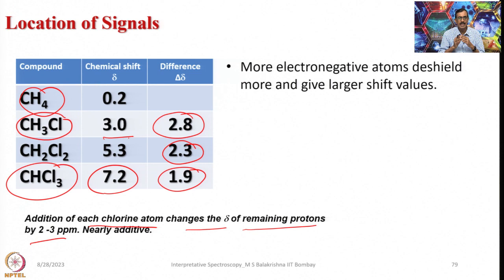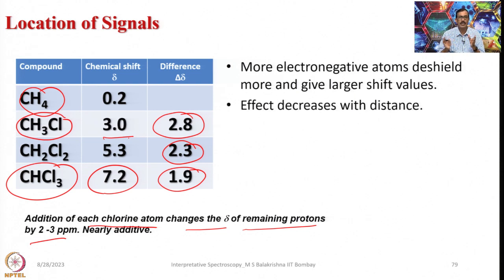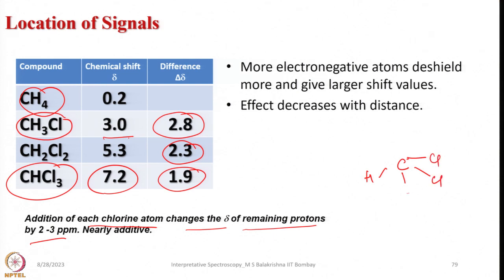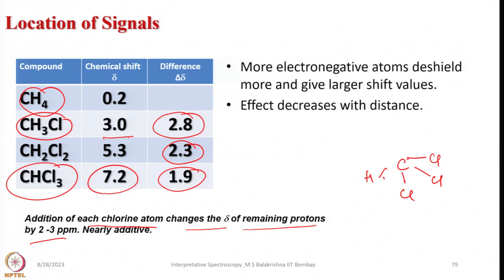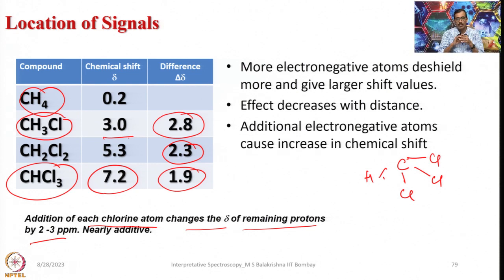More electronegative atoms deshield more and give larger chemical shift values. With three chlorine atoms more deshielding occurs because electron density is pulled toward them and the chemical shift is larger. The effect decreases with distance — the chlorine atoms are two bonds apart. As electronegative atoms move farther from the nucleus being considered, the effect decreases, and additional electronegative atoms cause a further increase in chemical shift.